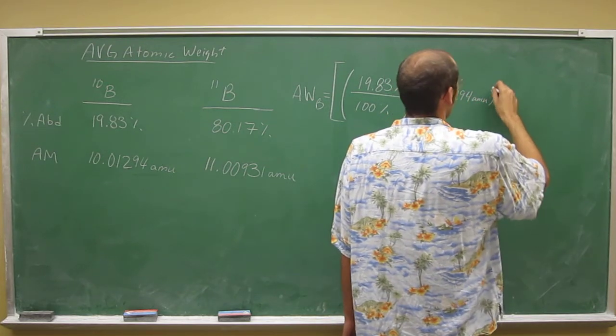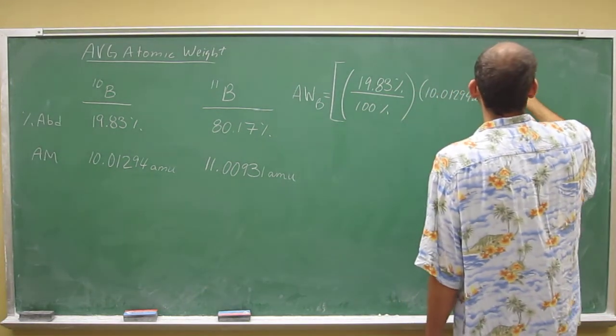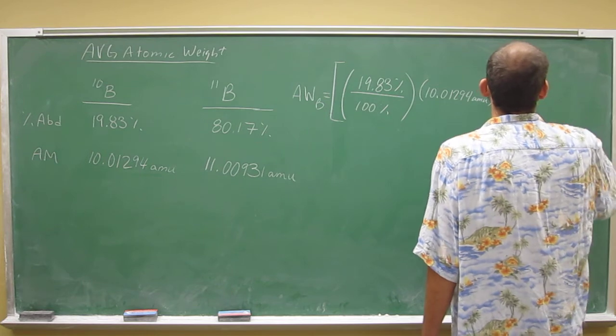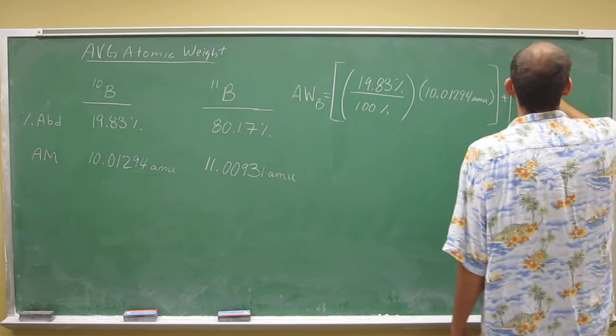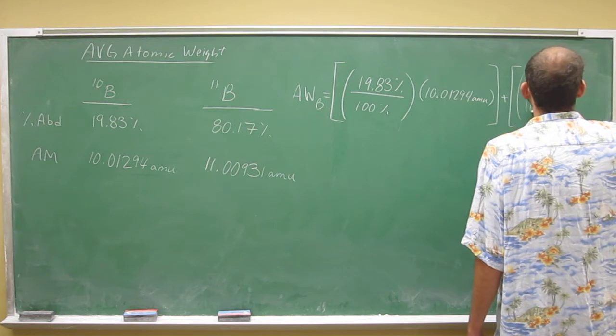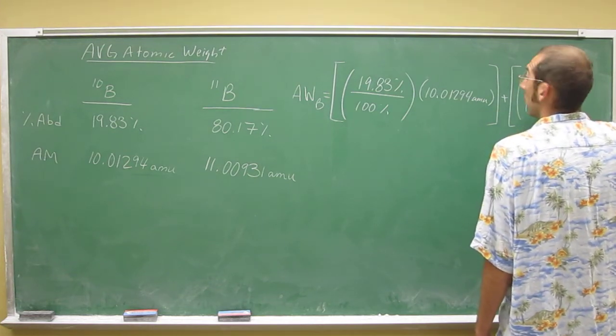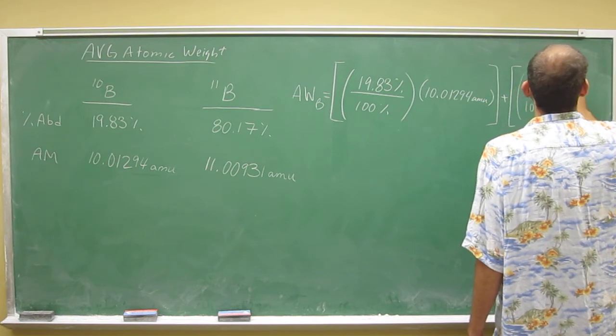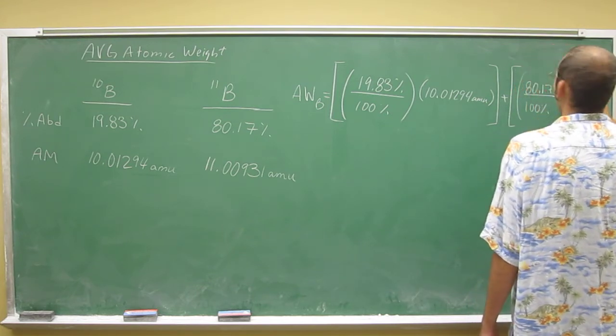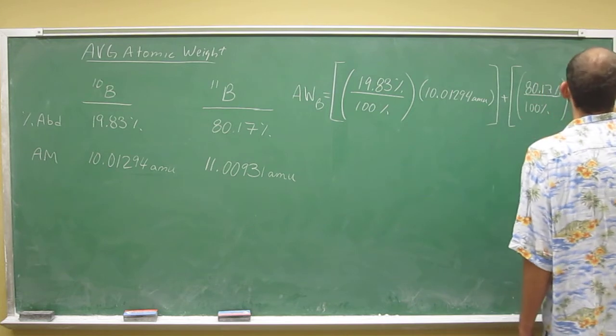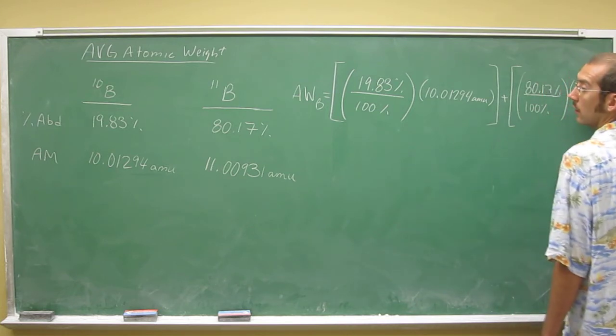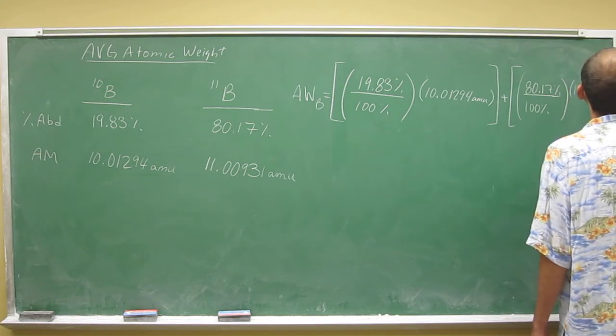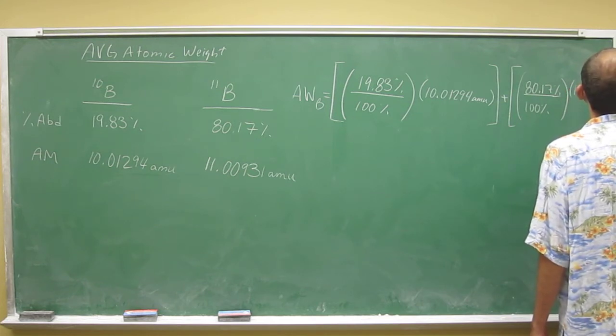So there you go. It's a different unit than the one we were doing before, or a different form of the same unit. It's 80.17% times, see if I can squeeze this in, 11.00931 a.m.u.